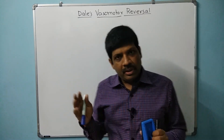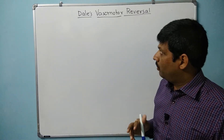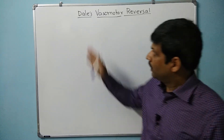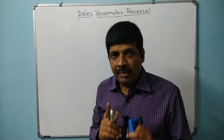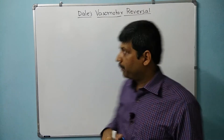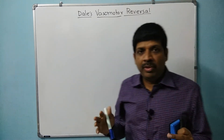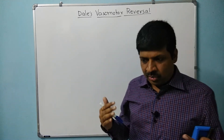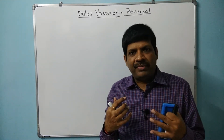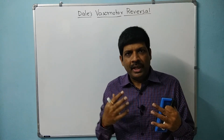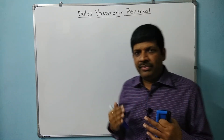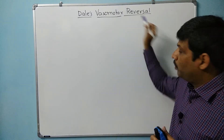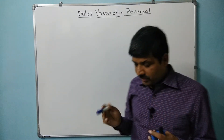Before going to the topic itself, I will tell you the meaning of each word. Dale is the name of a scientist who explained this phenomenon. Vasomotor is a phenomenon in the body through which there is constriction of blood vessels, leading to increased total peripheral resistance and increase in blood pressure, and then there would be a reversal — getting back to normal.